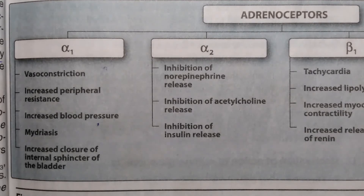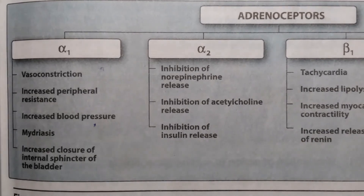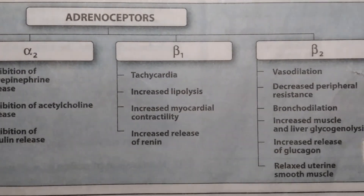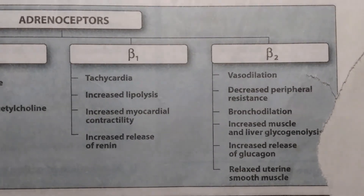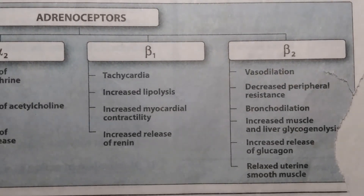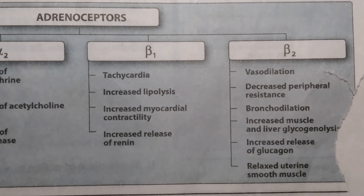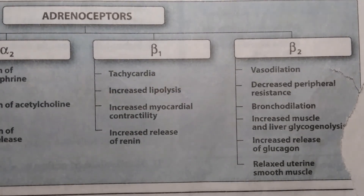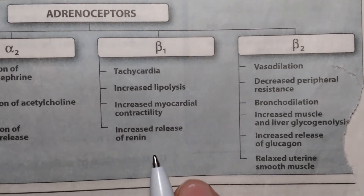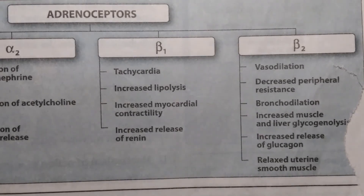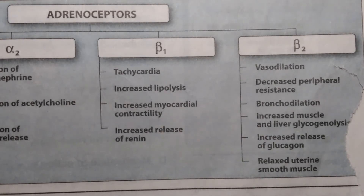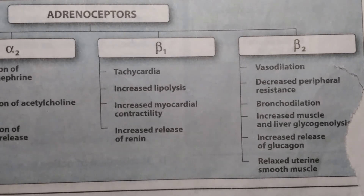Activation of beta 1 receptors causes tachycardia, since these receptors are predominantly present on the heart. Not only this, beta 1 is also involved in lipolysis and causes increased myocardial contractility. It also causes the release of renin, which is released in the presence of low blood pressure.